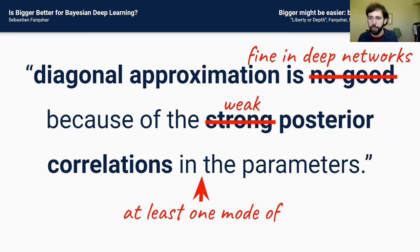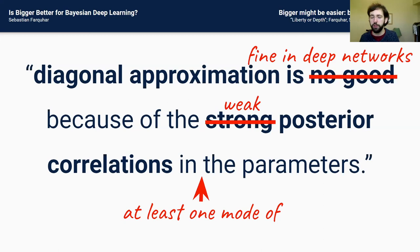To recap: although you might think you need off-diagonal approximations when doing approximate inference in neural networks, you can do surprisingly well with just mean field approximations as networks get larger. There are theoretical reasons to think that's what happens when you care about the predictive distribution, and we can confirm it empirically from several angles.